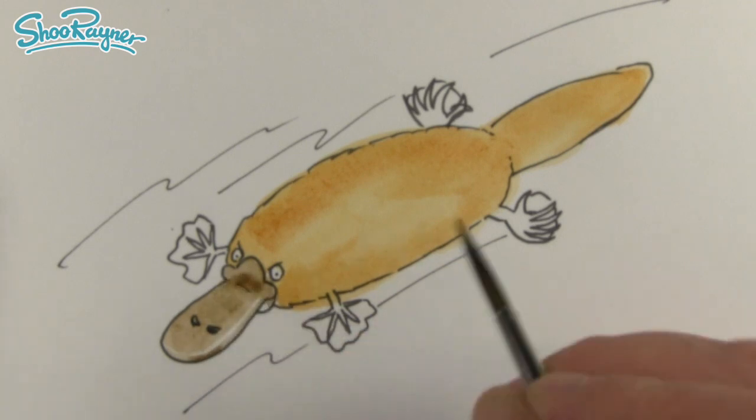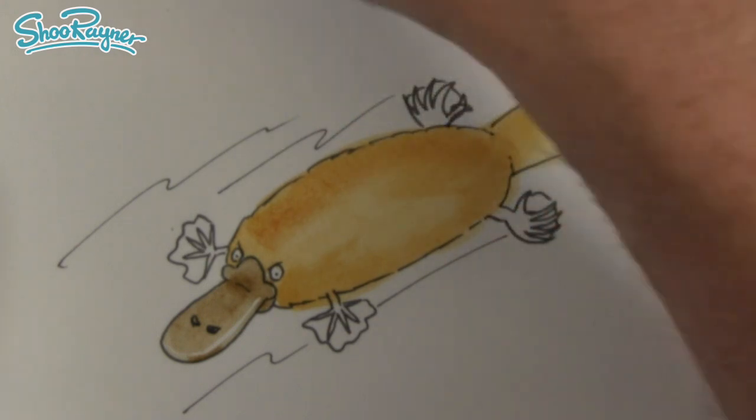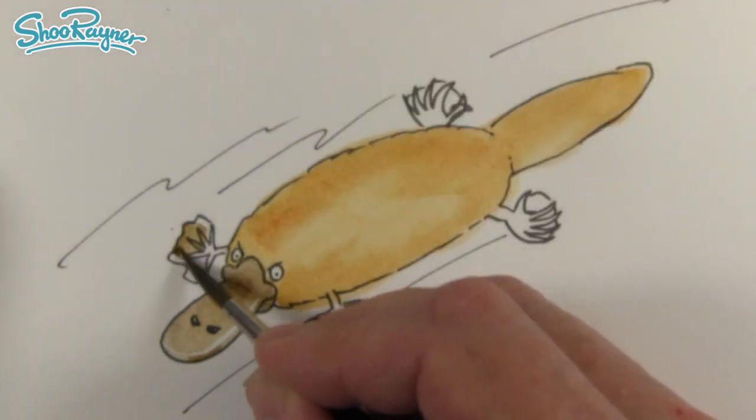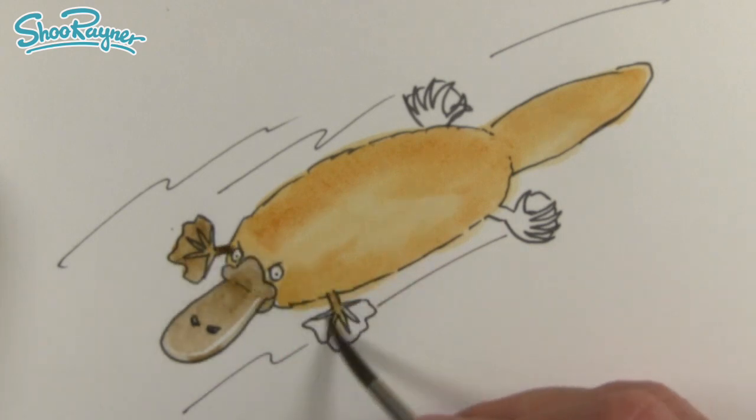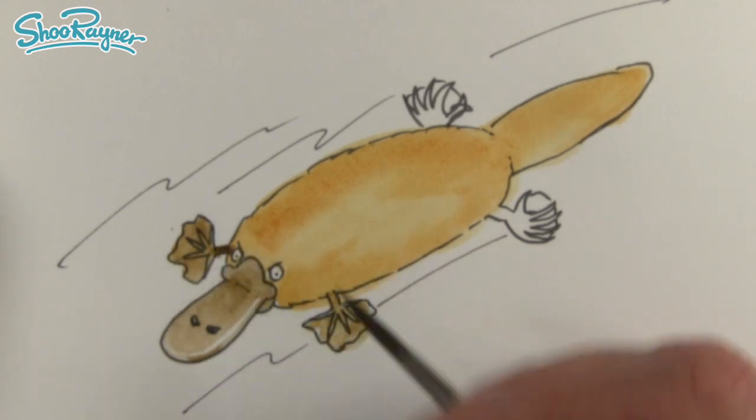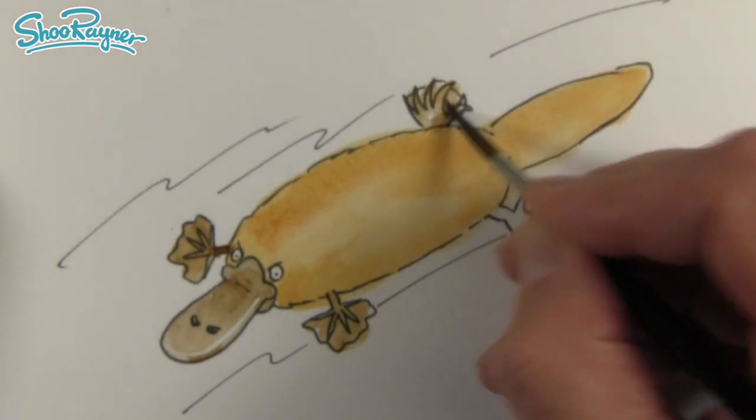Again we can do the little front feet like that and the back feet can go quite dark as well. This is actually a very simple kind of way to paint.